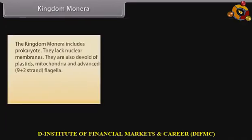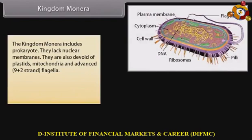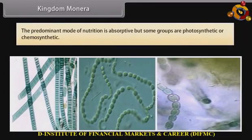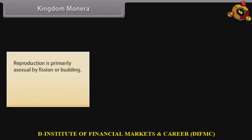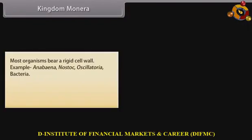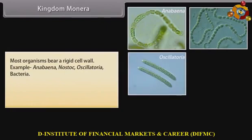Kingdom Monera includes prokaryotes. They lack nuclear membranes and are devoid of plastids, mitochondria, and advanced 9+2 strand flagella. Monera cells are microscopic and typically unicellular. The predominant mode of nutrition is absorptive, but some groups are photosynthetic or chemosynthetic. Reproduction is primarily asexual by fission or budding; protosexual phenomena also occur. Most organisms bear a rigid cell wall. Examples include Anabaena, Nostoc, Oscillatoria, and Bacteria.